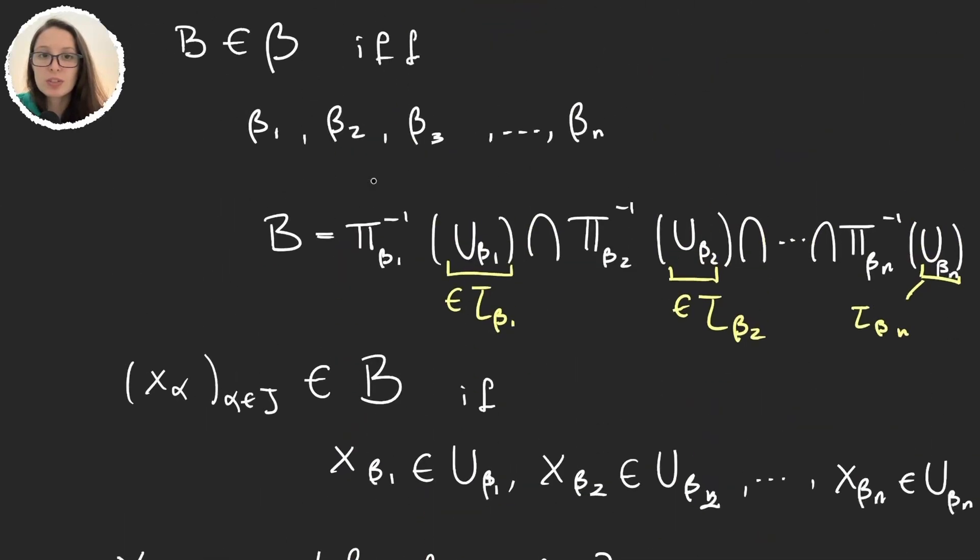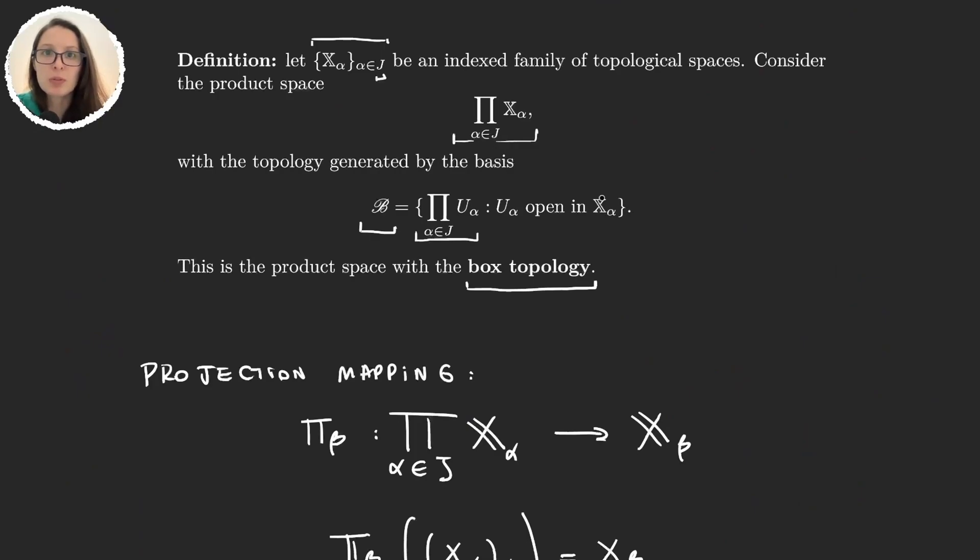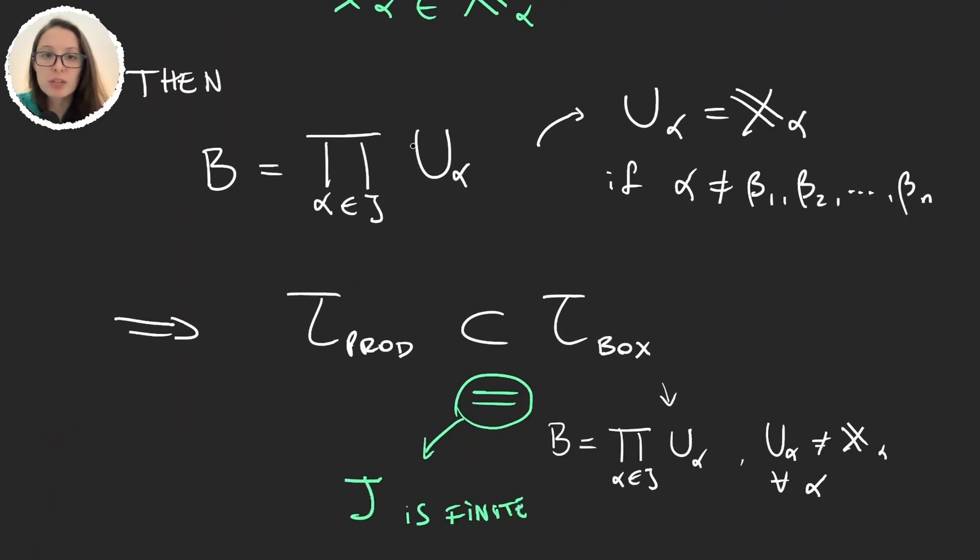Because if you think about it, the box topology is way simpler, right? I mean the definition is just doing the products of open elements for each space. However, for the other topology for the product, you have to be careful that in this product only a finite amount of these elements are not the whole space.